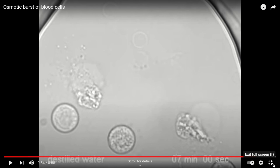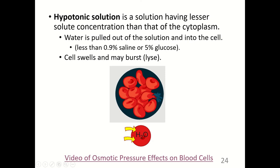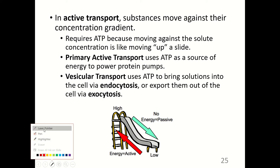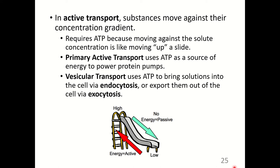Maintaining isotonic conditions is clearly important to homeostasis. In active transport, substances move against their concentration gradient, which requires ATP because it is like moving up a slide. There are two major types of active transport: primary active transport, which uses ATP to power protein pumps; and vesicular transport, which uses ATP to bring solutions into the cell via endocytosis or export them out via exocytosis.